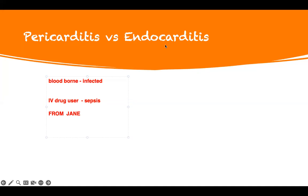The best way to remember them: if you develop endocarditis, you get a letter FROM JANE. This will give you all the signs and symptoms — F is Fever. It's an infection.